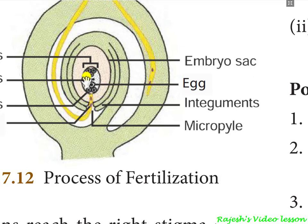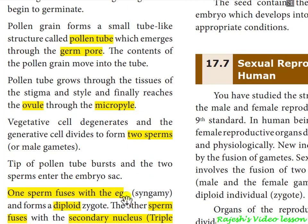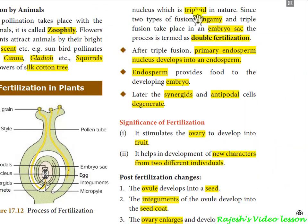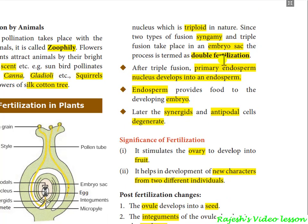One sperm will fuse with the egg and produce a zygote. The other sperm fuses with the primary endosperm cell — this is triple fusion — producing a diploid cell. The zygote develops into the embryo. The primary endosperm cell develops into the endosperm, which provides nourishment for the growing embryo. Since two types of fertilization take place in angiospermic plants, it is called double fertilization.